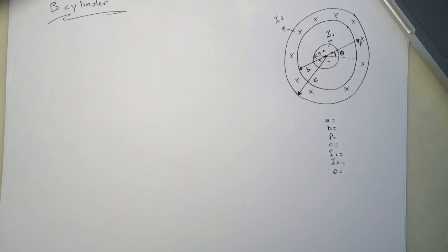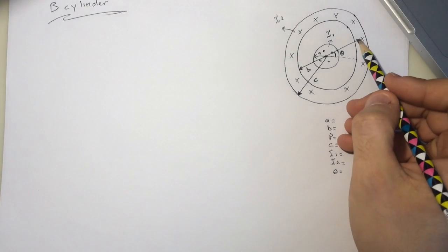Hi guys, this is a Smart Physics tutorial for the B cylinders. In this question we are trying to find the magnetic field in the x direction on the point P.